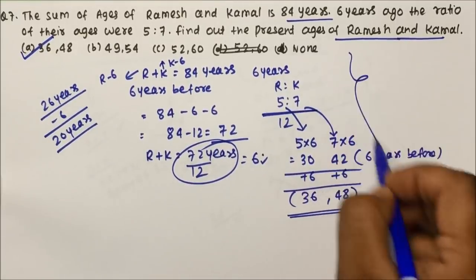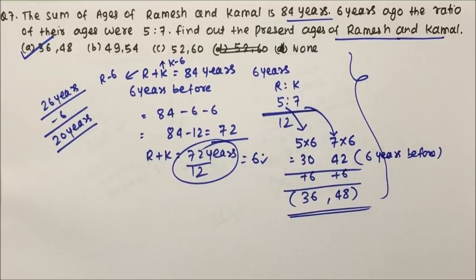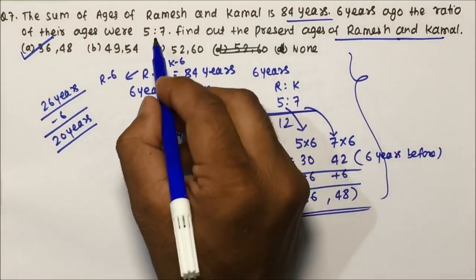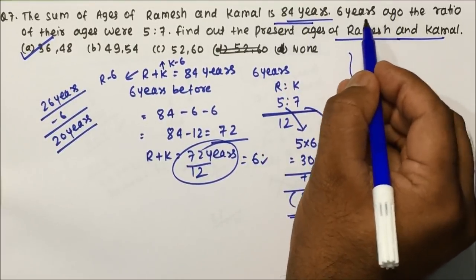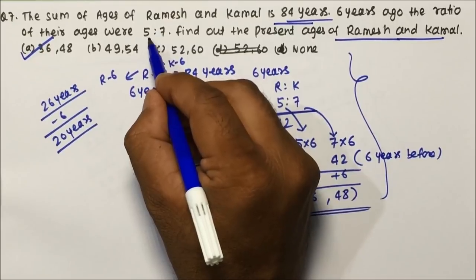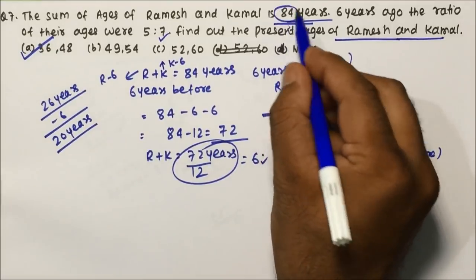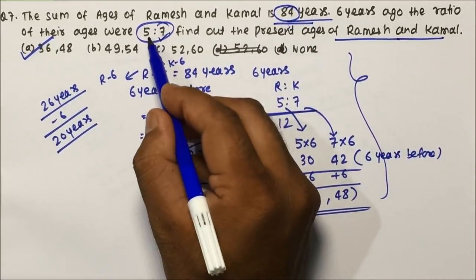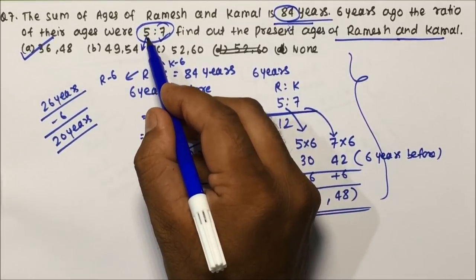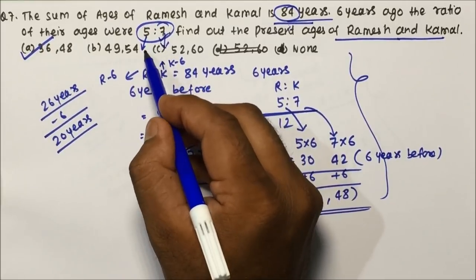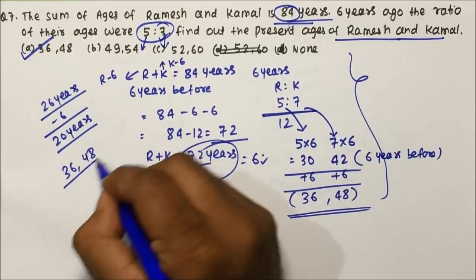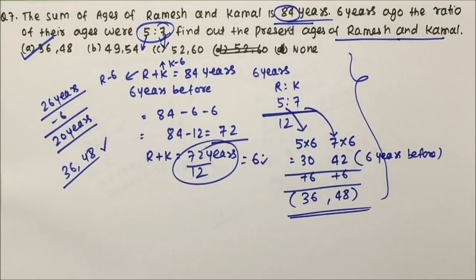This question I have explained in detail, but you could have done it without pen and paper. The sum is 84; subtract 12 for both persons going 6 years back to get 72; divide by 5 plus 7 equals 12 to get 6. So 5 into 6 is 30 and 7 into 6 is 42. Adding 6 gives present ages of 36 and 48. All the questions we did today were very important and we made them simple using tricks. If you like the video please put a comment so I will make more videos using tricks. Thanks a lot.